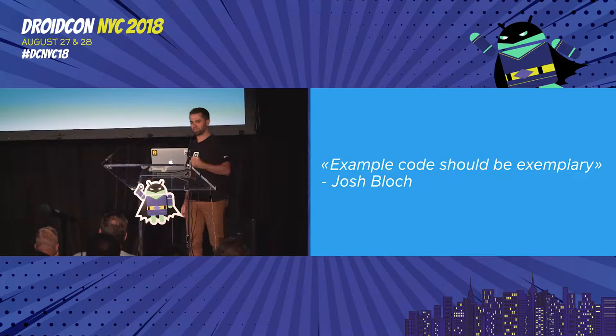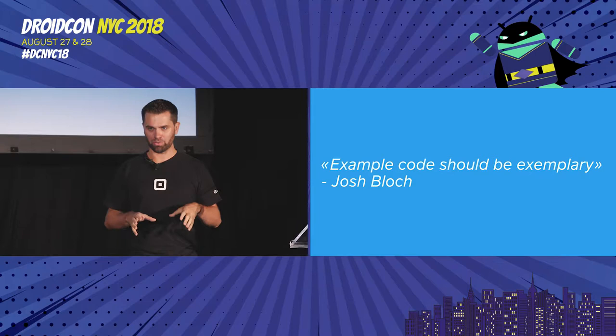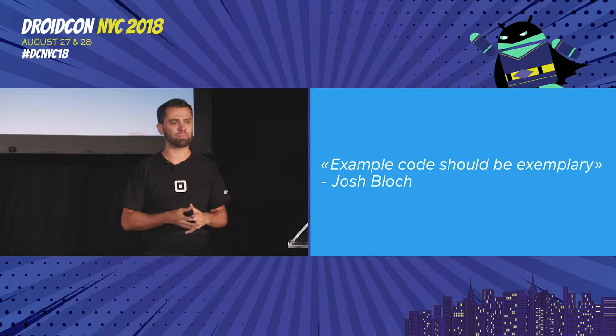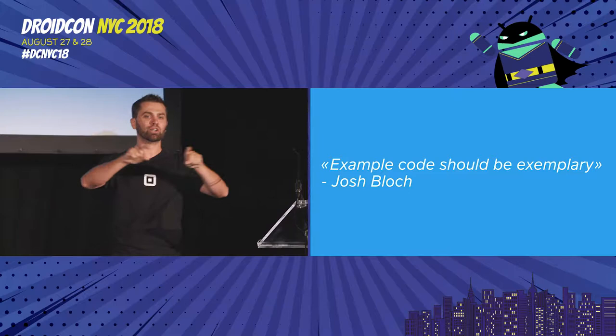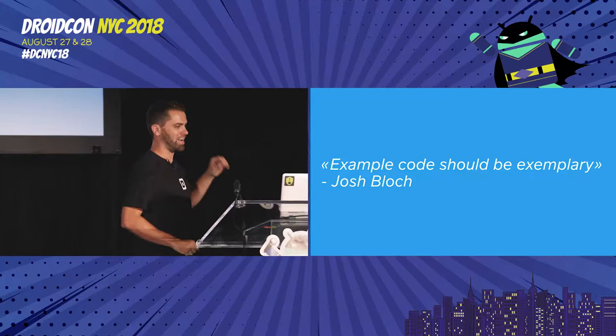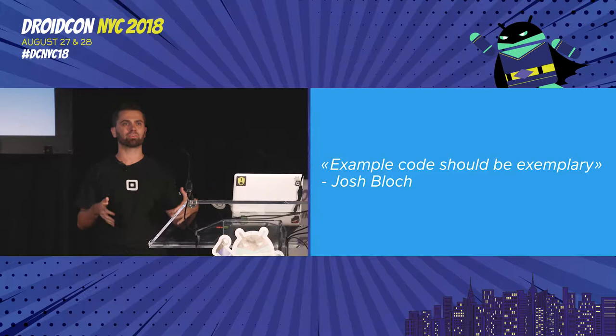There's another great quote from Josh Bloch: example code should be exemplary. When you write example code, write it like you're going to ship that app and maintain it for years. People are going to copy-paste that code over and over, and if you make any simplification with a comment like 'don't do this in real applications,' people are going to do it anyway. So every sample app should be written as you would write your own applications.